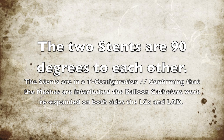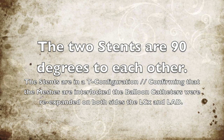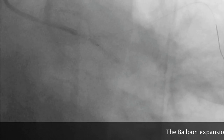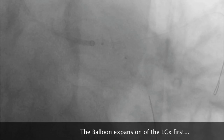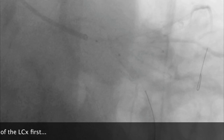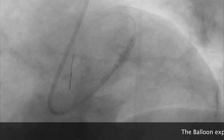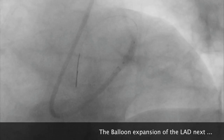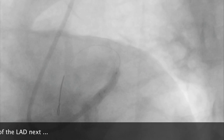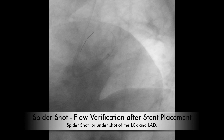The two stents are 90 degrees from each other in a T-configuration, confirming that the meshes are interlocked. Balloon catheters are placed in and expanded again — we see the two dots where the balloons are located. They expand the balloon to make sure the stent in the LCX is good, then put the balloon back into the LAD and expand the LAD stent to make sure it interlocks with the LCX circumflex artery.